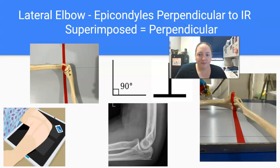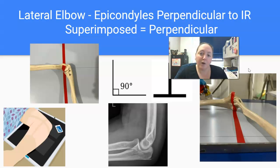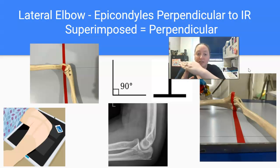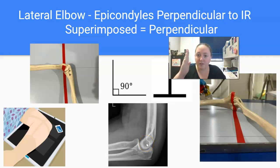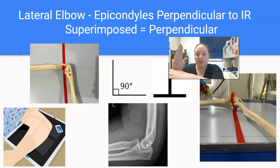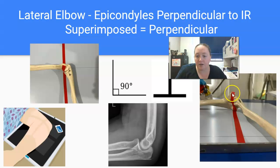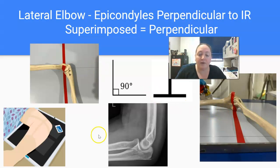When you're lateral — say a lateral elbow — your epicondyles are now perpendicular to the IR. Why? Because they're making a letter T; they're intersecting. If you draw a line from one epicondyle to the other, it's going to point up and down because they're now superimposed — on top of each other. That line compared to the plate makes a T. As you can see in this picture, the red line going through the epicondyles is intersecting, making a T with the plate. It's now at a 90-degree angle — they're superimposed.